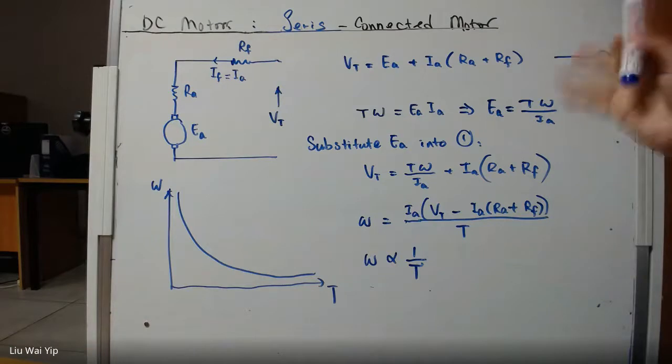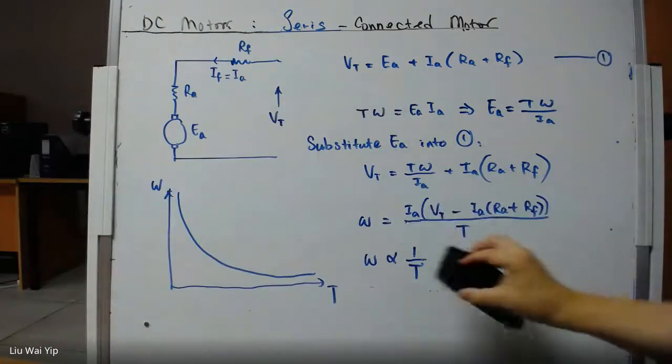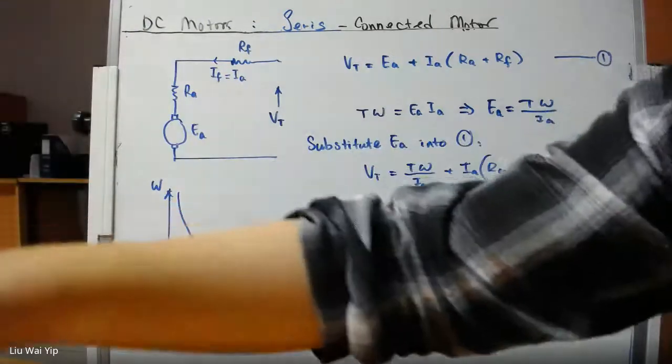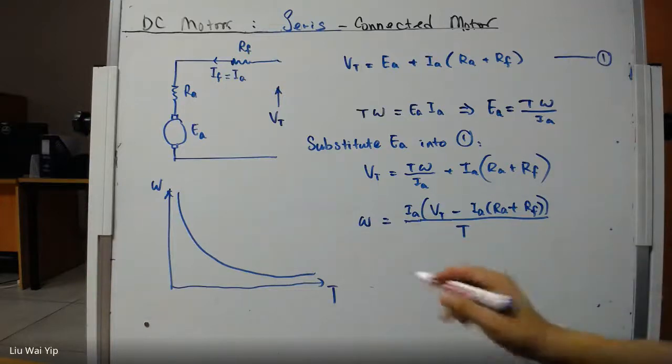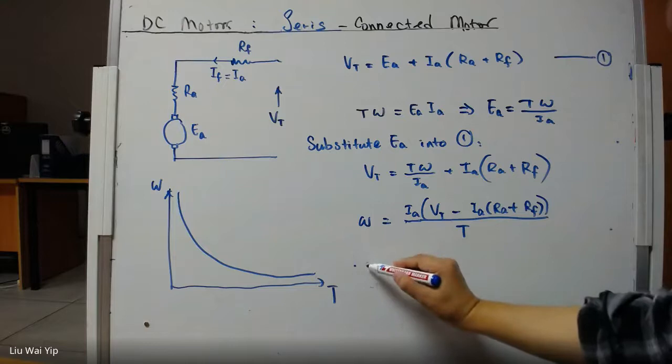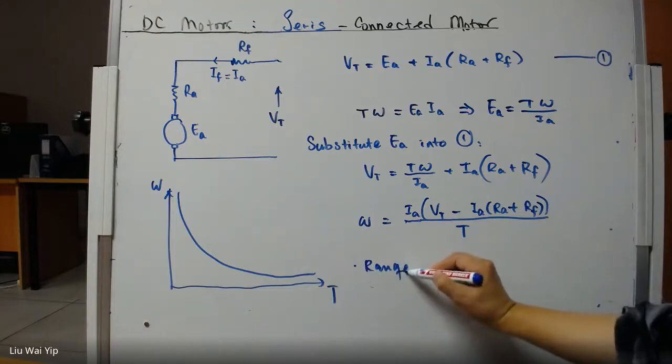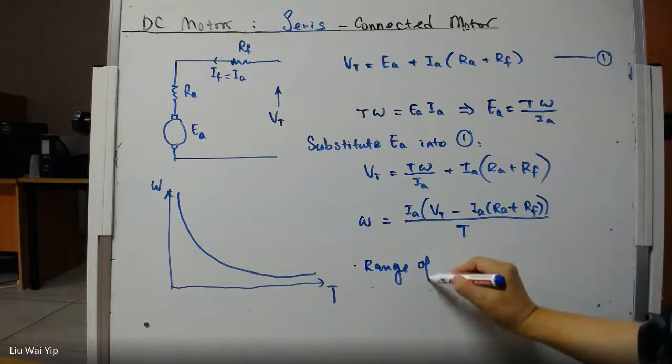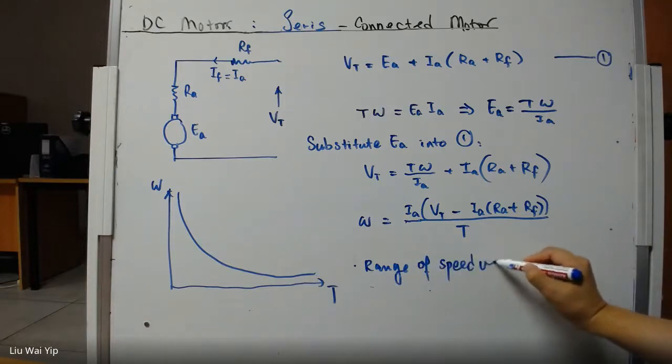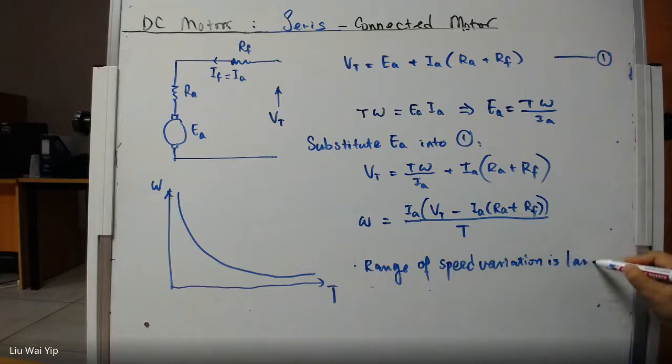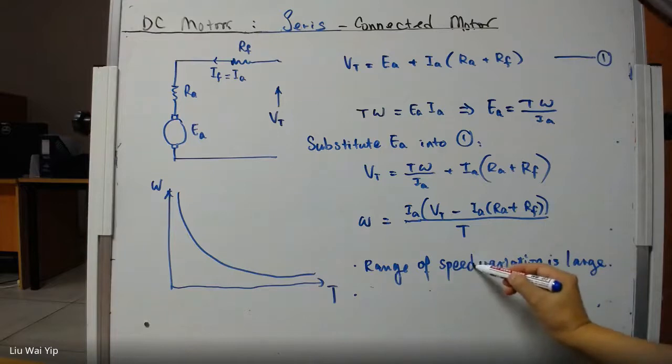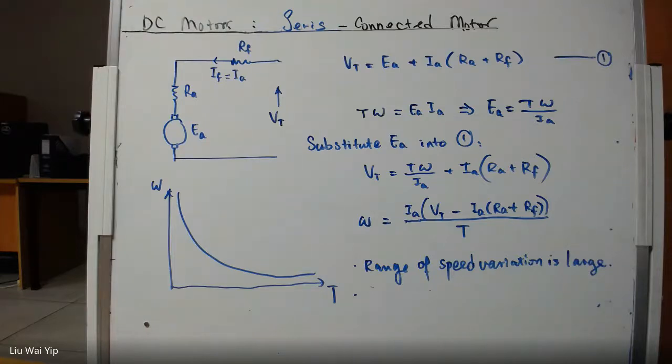So in other words, we can draw a few conclusions here. The number one conclusion based on the interpretation of this equation or the outlook of this graph is that the range of speed variation is large.